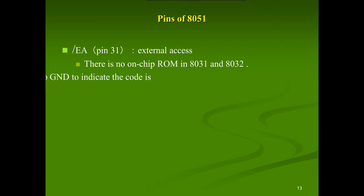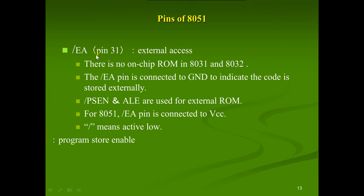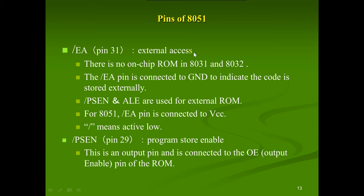Pin 31 is EA (External Access). In the 8031 and 8032, which have no on-chip ROM, the EA pin is connected to ground to indicate code is stored externally. For the 8051, EA is connected to VCC. PSEN bar (Program Store Enable) is an output pin connected to the output-enable pin of the external ROM.